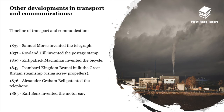Other developments in transport and communications include: Samuel Morse's invention of the telegraph in 1837, Rowland Hill's invention of the postage stamp in 1837, Kirkpatrick Macmillan's invention of the bicycle in 1839, Isambard Kingdom Brunel's Great Britain steamship using screw propellers in 1843, Alexander Graham Bell patenting the telephone in 1876, and Carl Benz inventing the motor car in 1885.